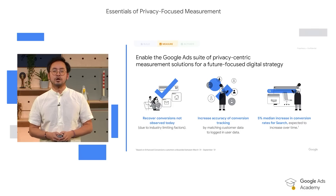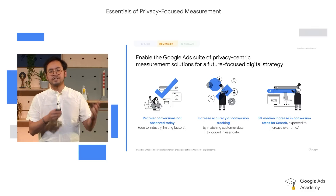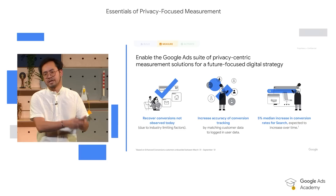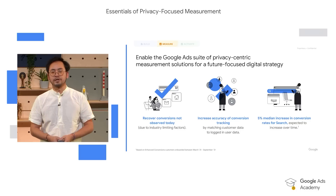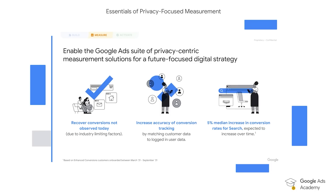As we know, today automated bidding strategies are all dependent on the amount of data that is observable and available within the systems. With greater modeling and greater observability, it will also help them perform at their best. We expect the increase on conversion rates to be 5% after implementation on search campaigns, and this amount is only expected to become higher as more and more browsers move towards cookie-less browsing modes.